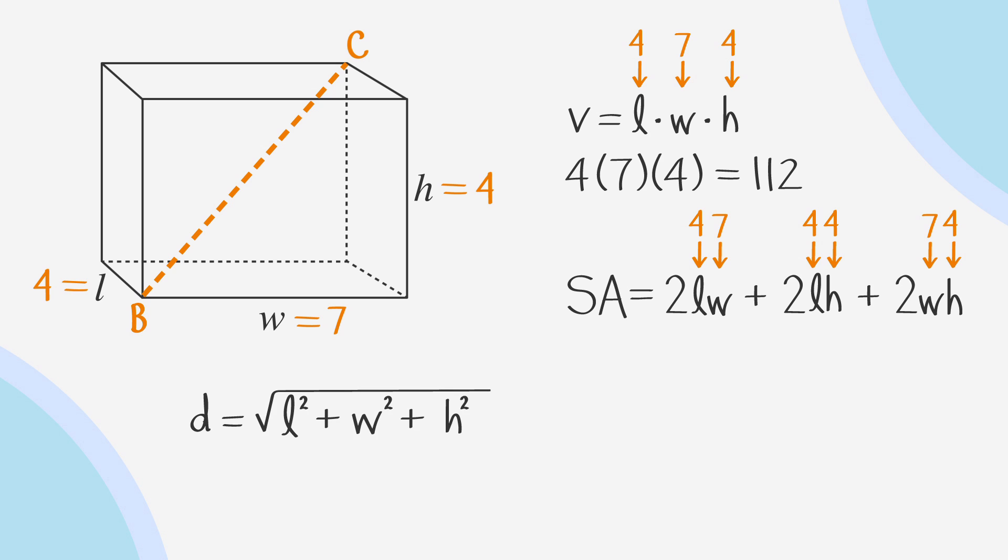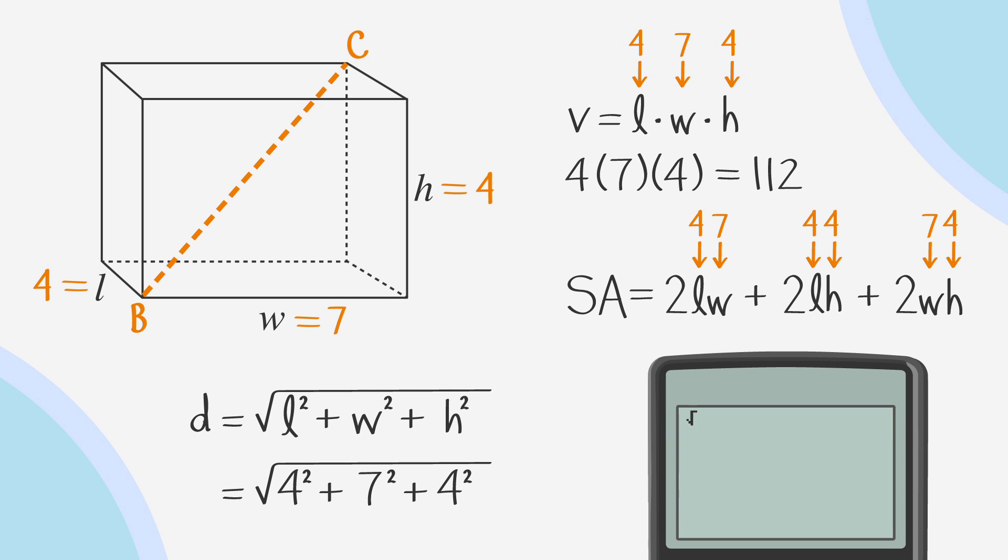We'll bring back the diagonal formula. Plug in our values to find that the long diagonal is the square root of 4 squared plus 7 squared plus 4 squared, which our calculator tells us is 9.